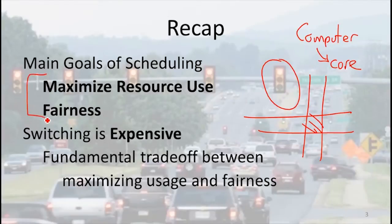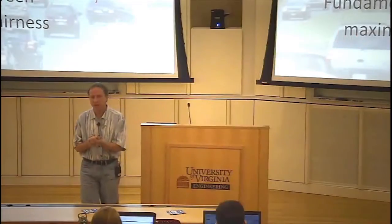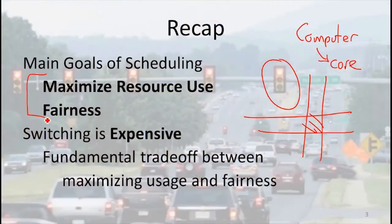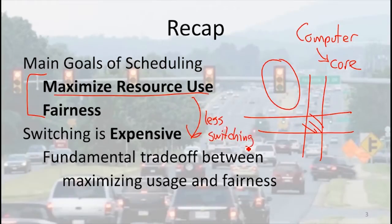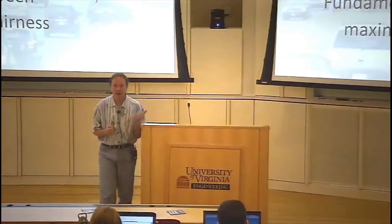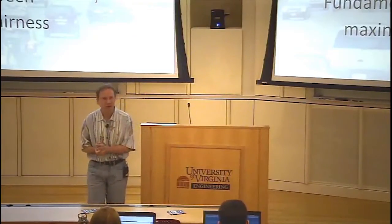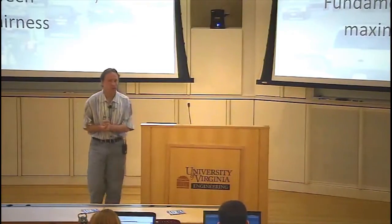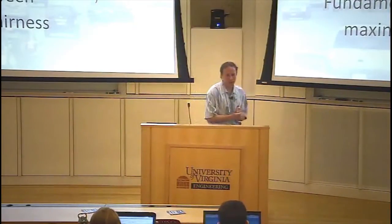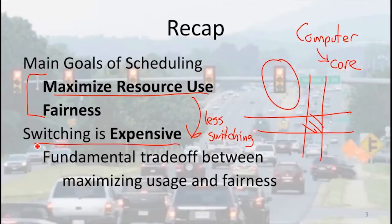There are two big competing goals for scheduling. We want to maximize use of our expensive resource — we'd like to keep the core busy doing useful things all the time — but we also want fairness. Maximizing resource use means less switching. We would maximize the use of our intersections if the traffic lights stayed green as long as there was traffic going, but that would upset people waiting two hours to get across. There's a big cost to switching, and we don't want to incur that cost more than we have to. But if we care about fairness or meeting deadlines, we have to do some switching.